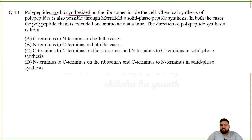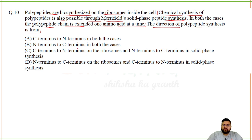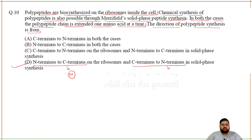Polypeptides are biosynthesized on ribosomes inside the cell. Chemical synthesis of polypeptides is also possible through Merrifield's solid-phase peptide synthesis. In both cases, the polypeptide chain is extended one amino acid at a time. The direction of polypeptide synthesis: on the ribosome it goes N-terminus to C-terminus (N-terminal is formed first), whereas in solid-phase synthesis the N-terminal is formed later.